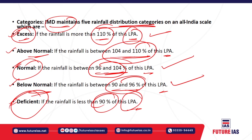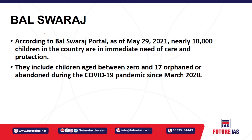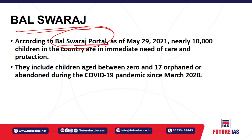Next, the Bal Swaraj portal, basically a portal created by the National Commission for Protection of Child Rights, which is a statutory body set up by an Act of Parliament for safeguarding child rights. The National Commission for Protection of Child Rights created an online tracking portal known as the Bal Swaraj portal, which monitors and tracks children specifically those in need. As of May 29, 2021, nearly 10,000 children in the country are in immediate need of care and protection.